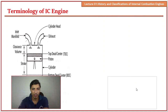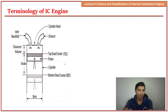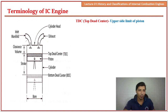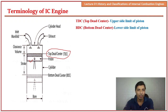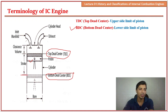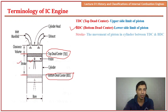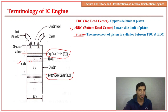We'll consider this 2D sketch to explain the parameters. One important parameter is TDC — Top Dead Center — which is the uppermost position of the piston; it cannot move beyond this limit. Another term is BDC — Bottom Dead Center — which is the lowest position the piston reaches. The distance between TDC and BDC is called the stroke. Stroke is the movement of the piston in the cylinder between TDC and BDC. This is the inlet manifold connected to the fuel tank.